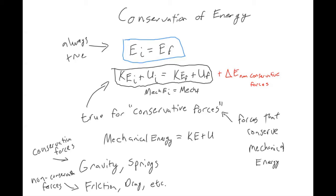So if the problem says ignore friction or air resistance, then you can just use the black box. But then if the problem includes friction or air resistance or something like that, then you just need to add this term in red to account for the energy that's being dissipated by those other forces.